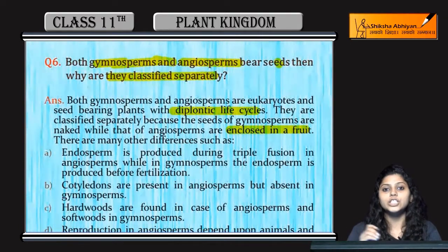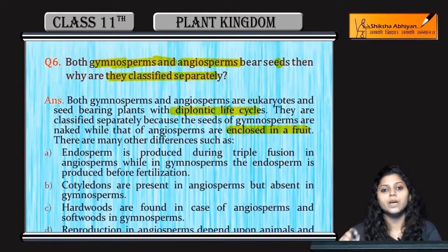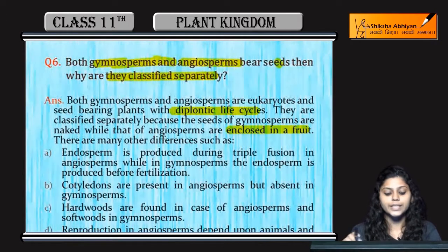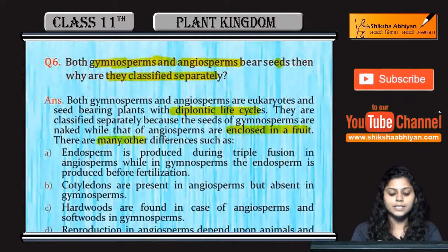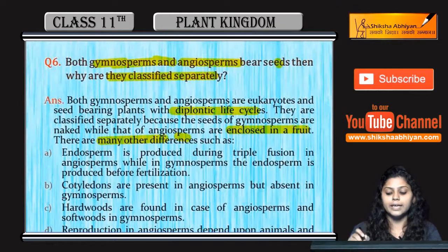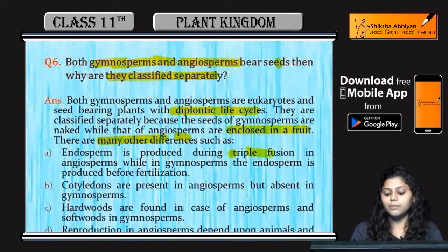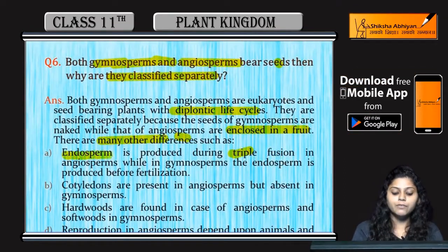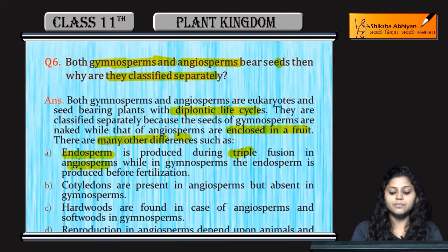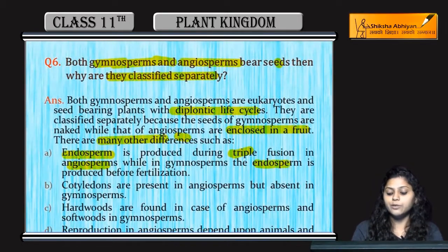Gymnosperms में flowers नहीं होते, whereas angiosperms में flowers होते हैं। Another difference: endosperm in angiosperms is produced during triple fusion, whereas in gymnosperms, endosperm is produced before fertilization.